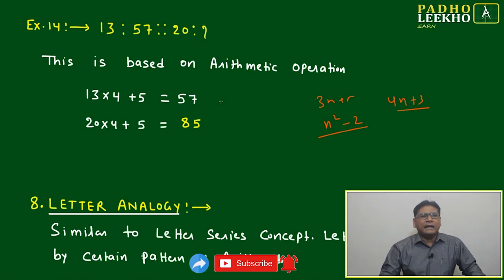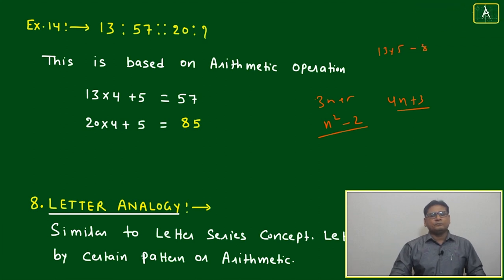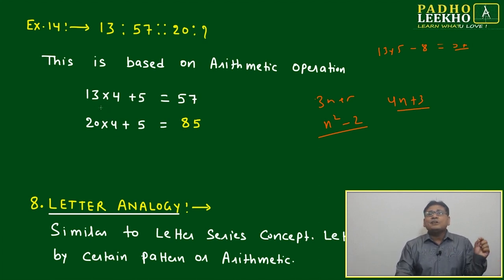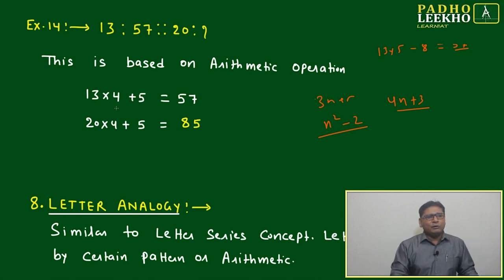Like here we can say, in place of 13 into 4 plus 5, we can say 13 into 5, this is 65 minus 8 - that is also 57. That is also 57. Due to whatever things are there, here multiple possibilities can be there. Based on the option choices we have to pick which one is followed. Like one thing is here followed: 13 into 4 plus 5.